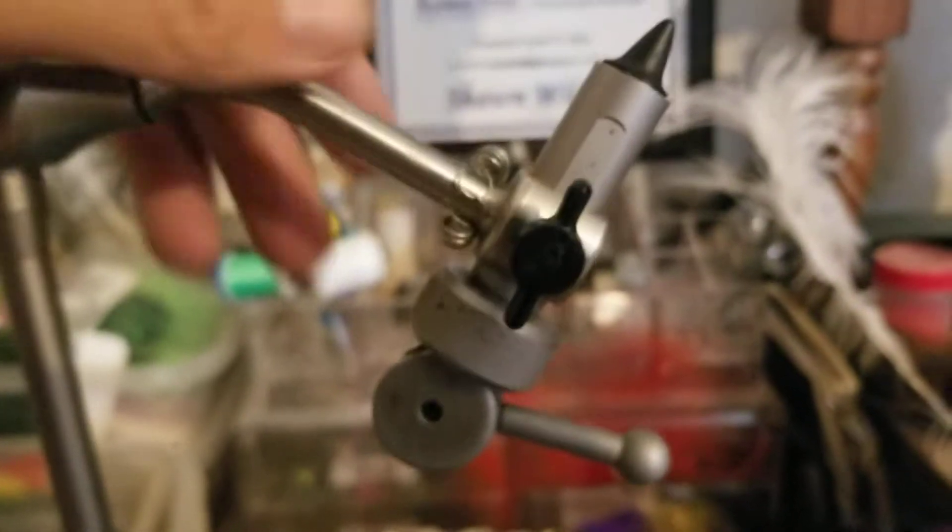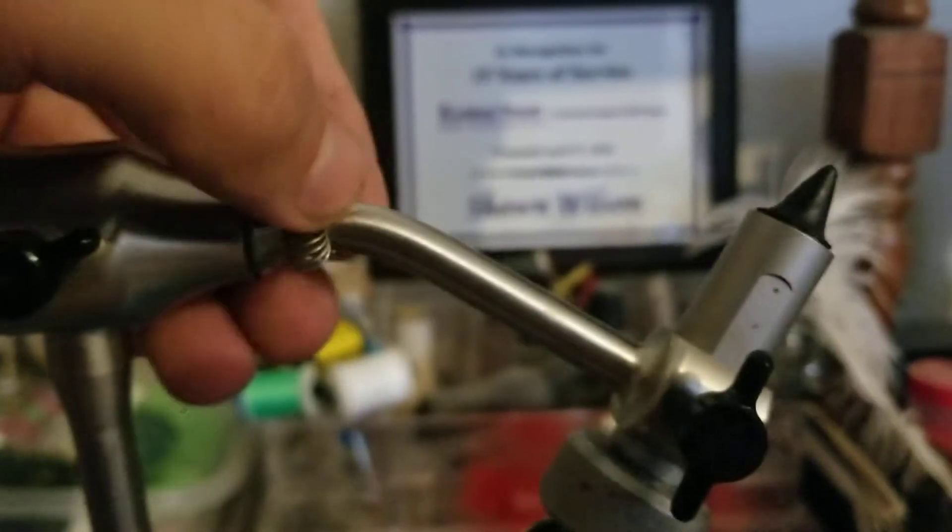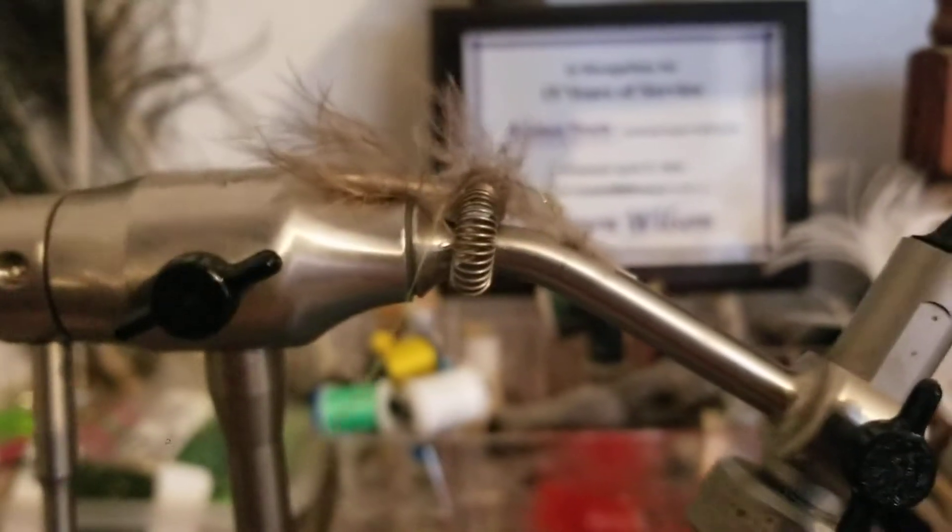This little spring here, basically pretend that feather is tied to a jig. That's basically all you do with that. It just holds your material out of the way so you can continue tying on something.